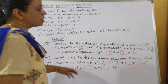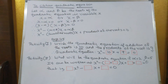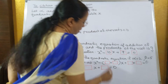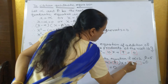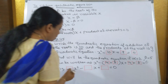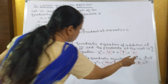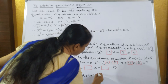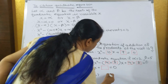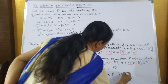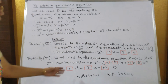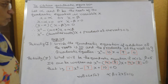Activity 2: What will be the quadratic equation if alpha equals 2 and beta equals 5? The roots are alpha and beta, so it can be written as x squared minus (alpha plus beta) into x plus alpha into beta. Alpha plus beta equals 2 plus 5 equals 7, and alpha into beta equals 2 into 5 equals 10. So the equation is x squared minus 7x plus 10 equals 0.